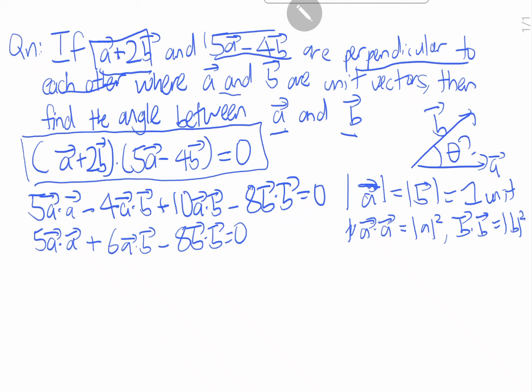So now let's apply here. We know that this equals to one since this is one unit, this is one unit, so this also equals to one. Therefore 5a² plus 6ab minus 8b² equals to zero. This means that a² will give me one, this one also give me one, so 5 plus 6ab minus 8 equals to zero.